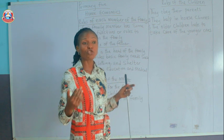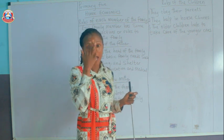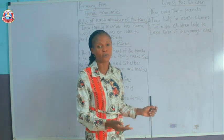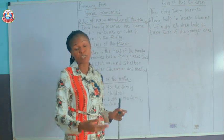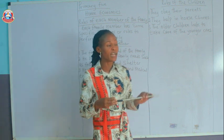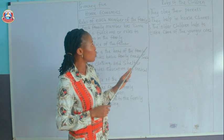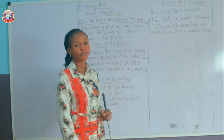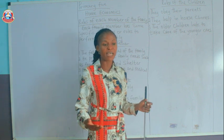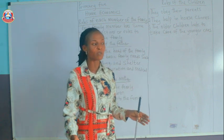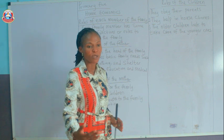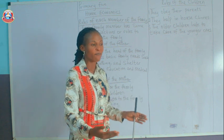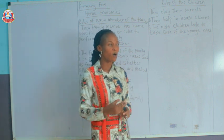The children help in house chores. A lot of us do house chores — some of us can sweep, some can wash clothes, some can wash plates, some can wash the car. Also, the older children help to take care of the younger ones at home. As the eldest in the family, you can help your parents by taking care of the younger ones — clean them up, bathe them, give them clothes to wear, and set their food on the table.